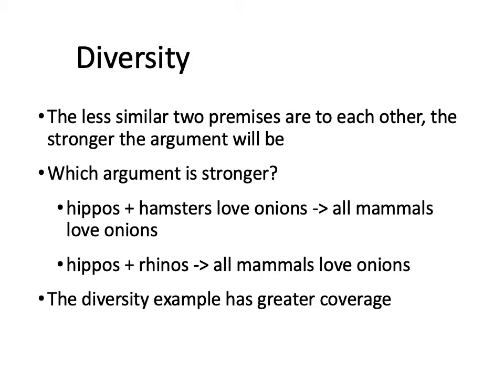The similarity-coverage model predicts similarity-based induction, typicality-based induction, and the diversity effect, but it doesn't predict everything. It places heavy emphasis on category membership, but sometimes people use direct similarity between objects rather than category membership. This gives rise to something known as the inclusion fallacy.